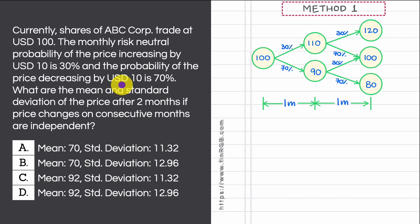In this video we will take a look at the concept of expected value and variance of a discrete random variable, using a simple solved example taken from an old sample paper from GARP. This video will be helpful for candidates preparing for the FRM Part 1 exam.